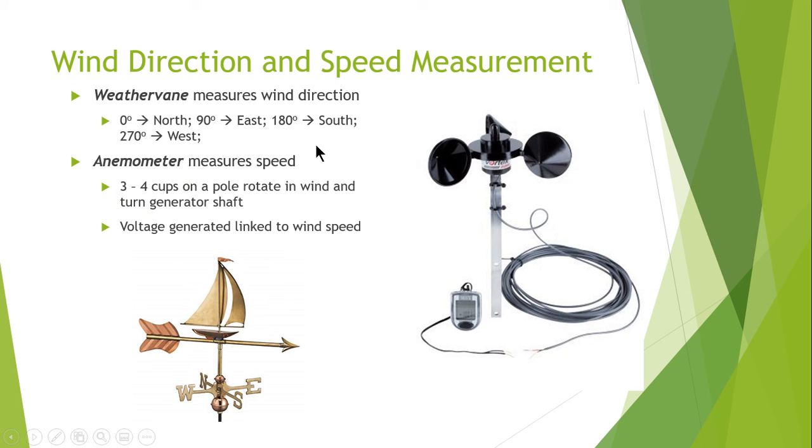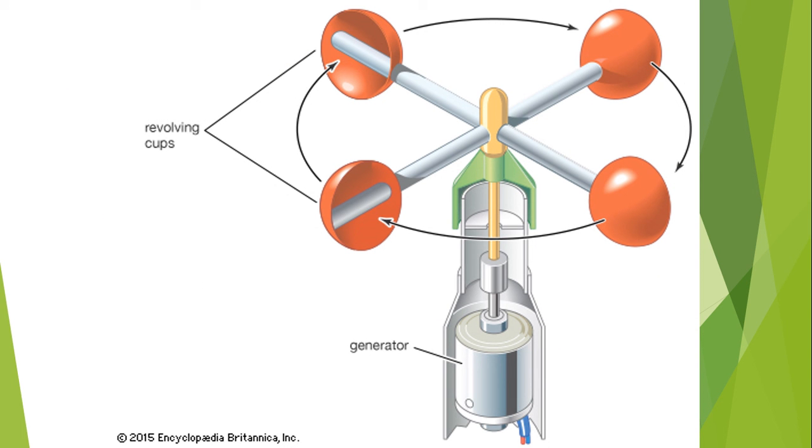The next one is the anemometer and it is used for measuring the speeds of wind. These are the three to four cups on a pole that rotate in wind and turn the generator shaft. The generated voltage is then used to calculate the wind speed. This is the example of anemometer.